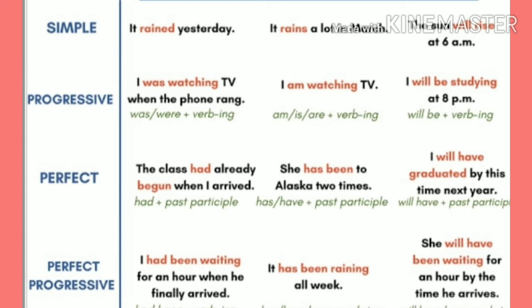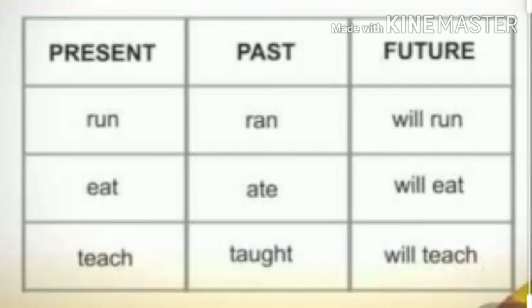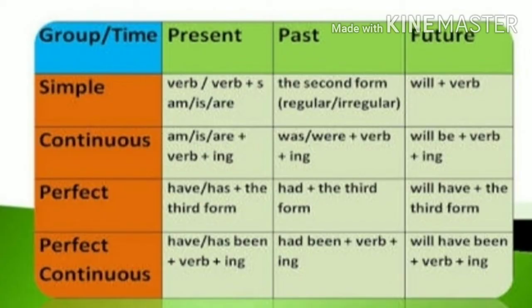So we have to go through the chart of verb forms — that is the present form of the verb, past form of the verb and the future form of the verb. You can find that chart in your book. For example, 'run' becomes 'ran' in the past and for the future we write 'will run.'